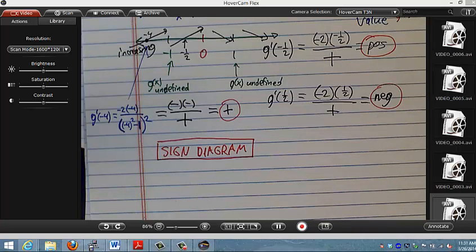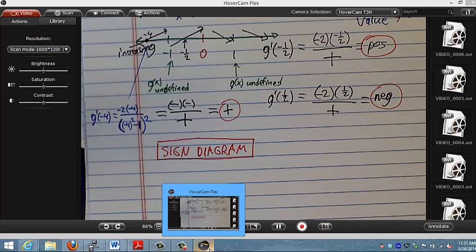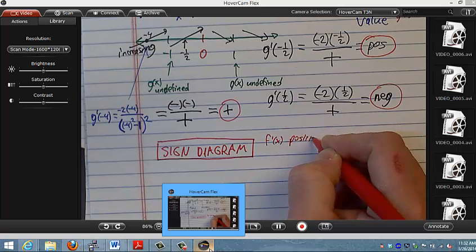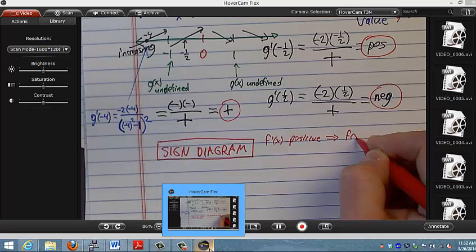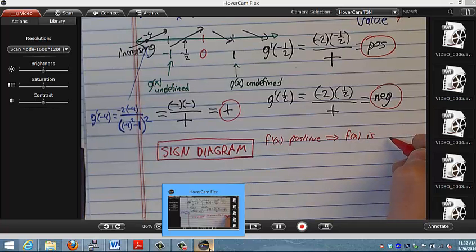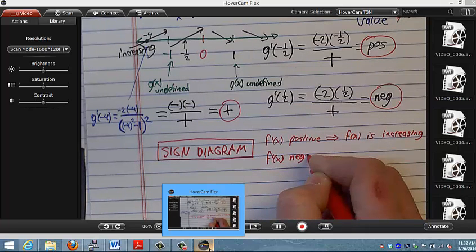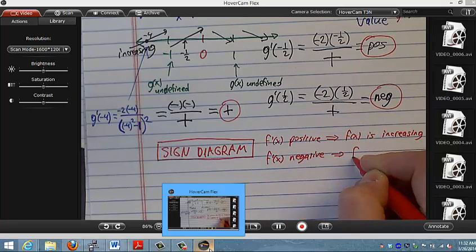So I just want to make a point of that, that when you do the first derivative test, or next week we're going to learn something, the second derivative test, you don't care so much what the values are. All you care is are the values positive or negative. Because if f prime of x is positive, what does that tell me about the function f of x? If f prime of x is positive, then f of x is increasing. And if f prime of x is negative, then it's decreasing. f of x is decreasing.